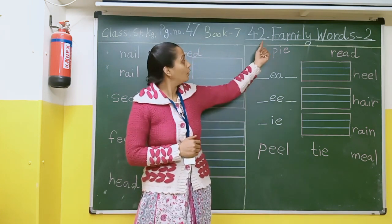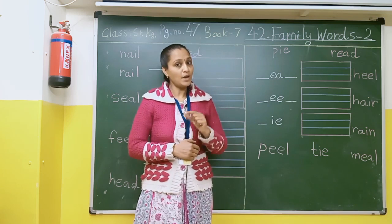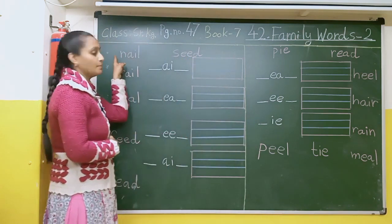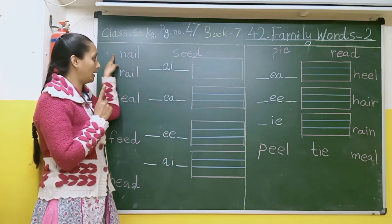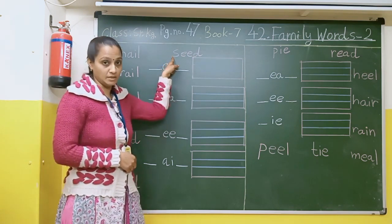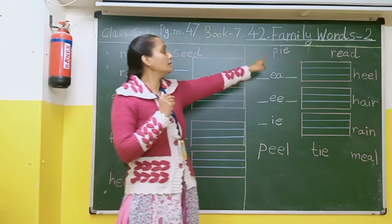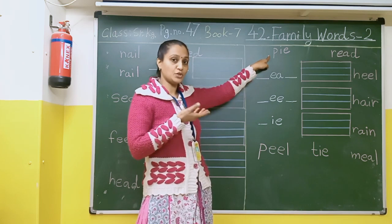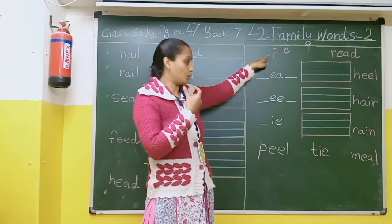Today we will do Family Words 2. Here there is an image of a nail — in your book, the nail is seen. After that, here there is an image of a sea — sea means beach. After that, here there is an image of a pie — jis mein pastry hoti hai aur oopar fruits aur cream ka layer hota hai.